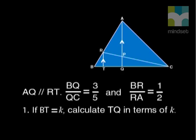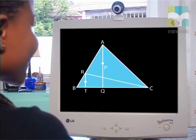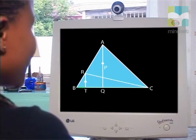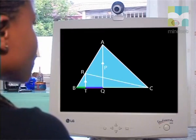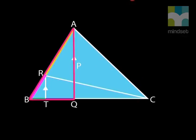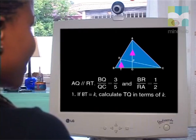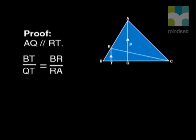The first question is, if BT equals K, calculate TQ in terms of K. Can you identify which triangle you need to work in? What triangle has sides BT and TQ? BT and TQ are part of triangle BQA. Correct. BR and RA are also part of this triangle. Using the proportion theorem, what ratio can we say are equal? Well, AQ is parallel to RT. So, by the proportion theorem, we can say that BT divided by QT equals BR divided by RA.